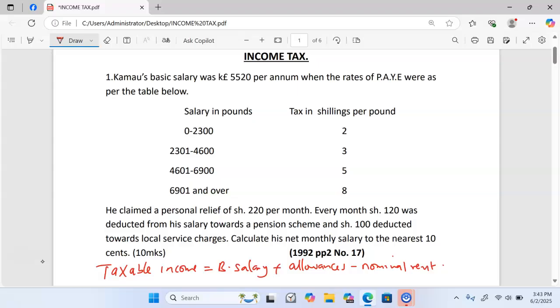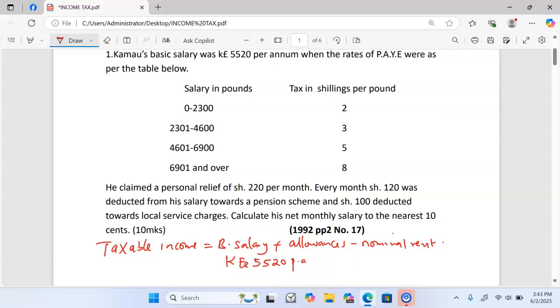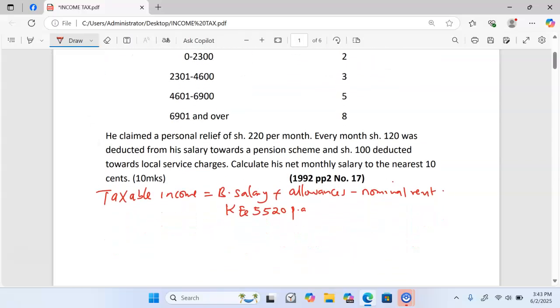When allowances are not given, basic salary equals taxable income. In this case, our taxable income is 5,520 Kenyan pounds per annum. We now move to start taxing.